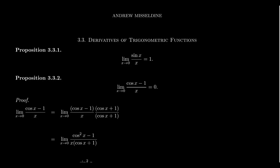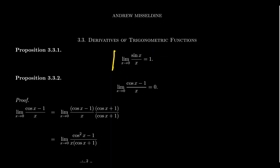Notice that if you plug in 0 into cosine, you're going to get cosine of 0, which is 1. 1 minus 1 is 0 over 0. Likewise, if you take sine of 0, which is 0, you get 0 over 0, which is likewise 1. So knowing this fact already established by the squeeze theorem, let's see why the limit of cosine x minus 1 over x is 0 as x approaches 0.